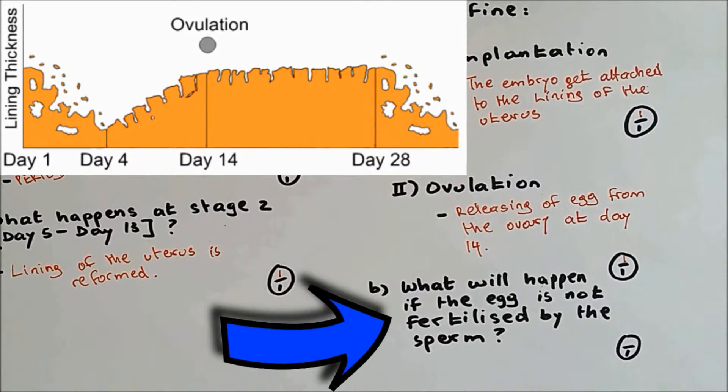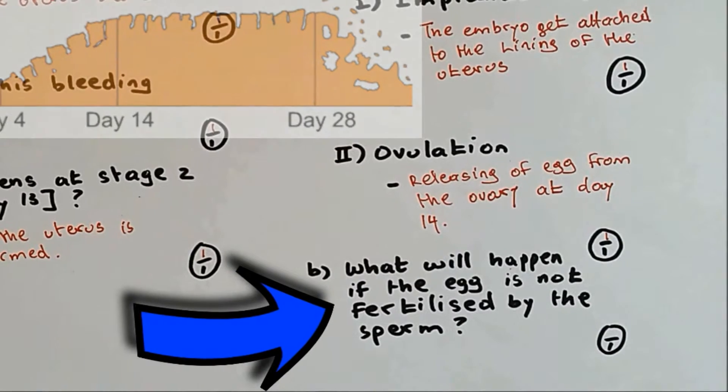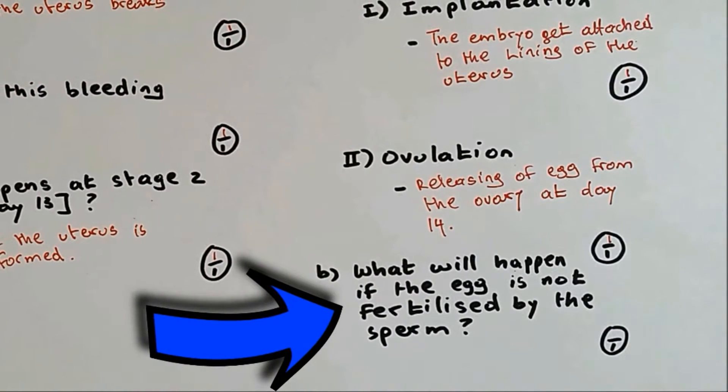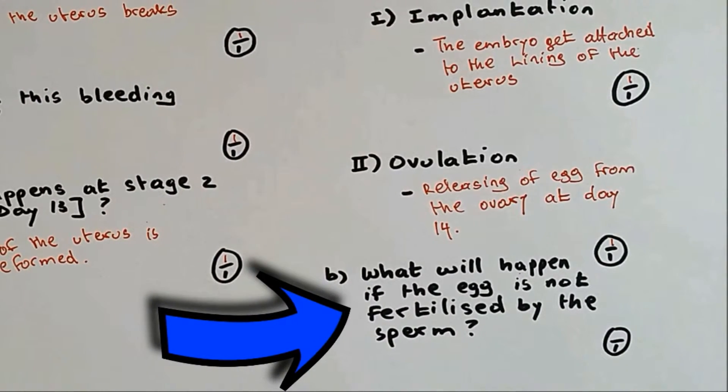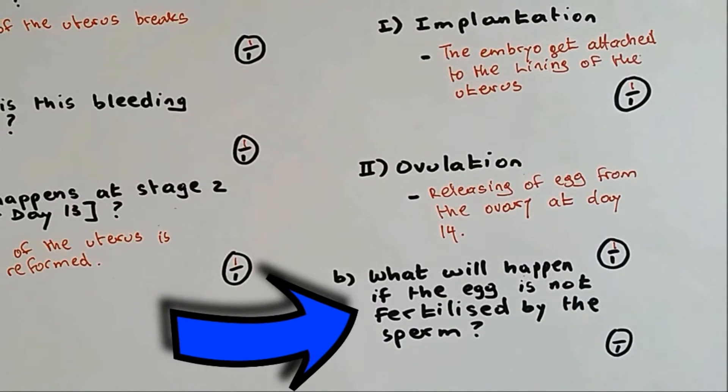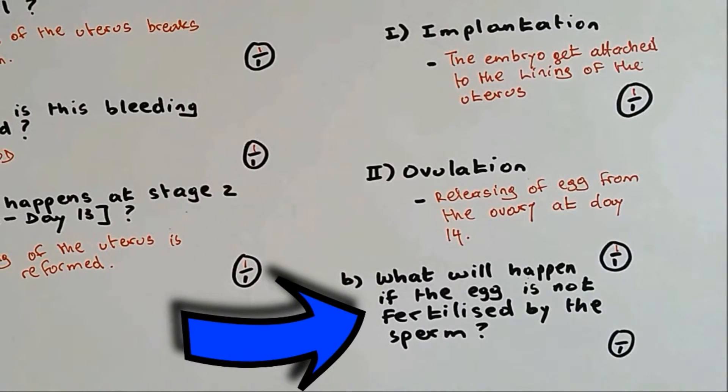Question 2b: what will happen if the egg is not fertilized by the sperm? If the egg is not fertilized by the sperm, then the whole cycle starts again, which means the lining of the uterus breaks again.